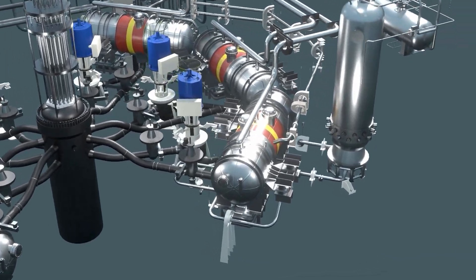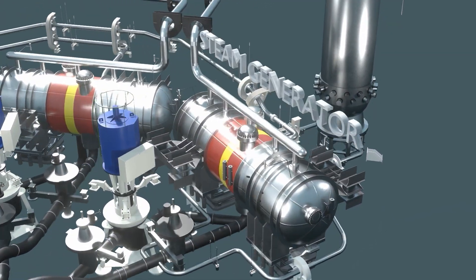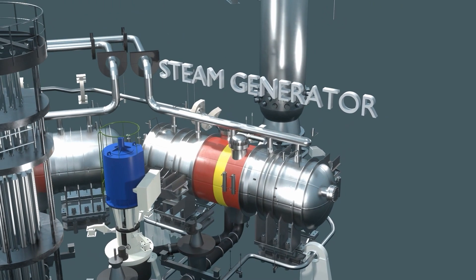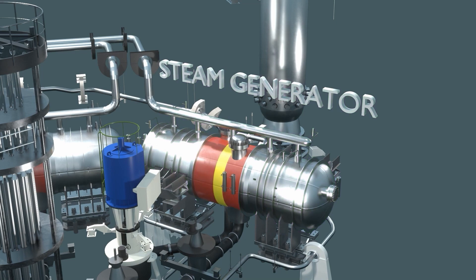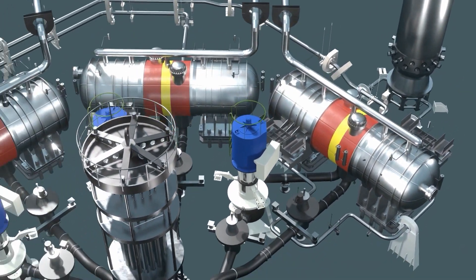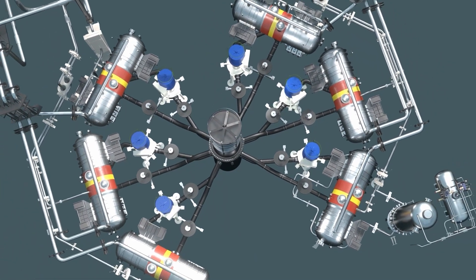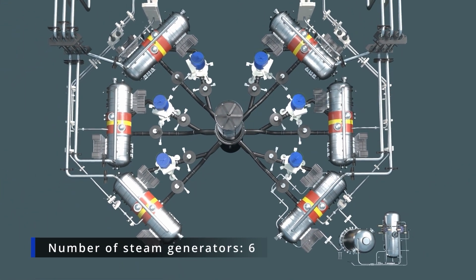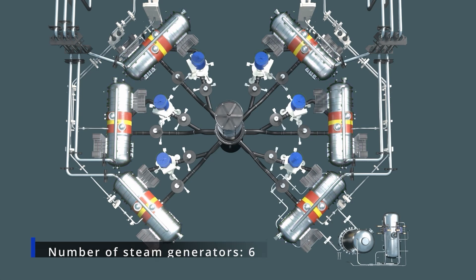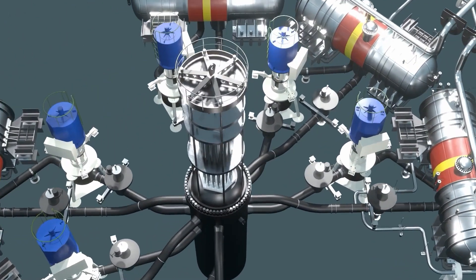Through the hot branch of the main circulation loop and the primary collector, the medium enters the steam generator. There, through heat exchange tubes, it transfers heat energy to the secondary water. This is where the hermetically separated nuclear circuit ends and the non-nuclear, secondary circuit begins.